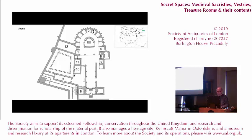Moreover, the library of Bishop Joan Margarit, donated for use by his foundation of a school for choirboys, was also withdrawn to the treasury. The treasury also housed a box filled with money, while the cathedral documents were kept in a chest in the chapter house.